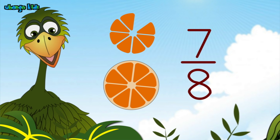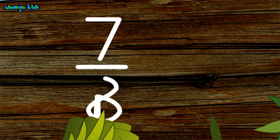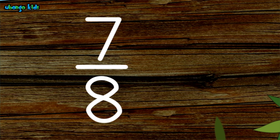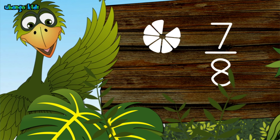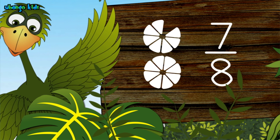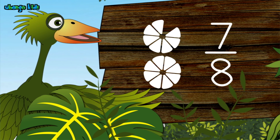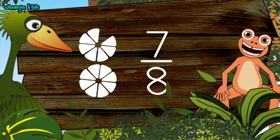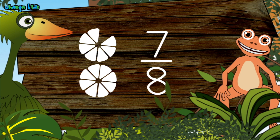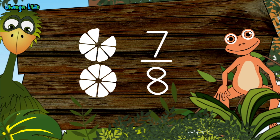So what fraction is there left? 7 eighths are left. Do you know the meaning of 7 eighths, Chola? We have still got 7 out of those 8 original pieces. So what is that called? In Kiswahili, we'd say Sabayanane. In English, 7 eighths.